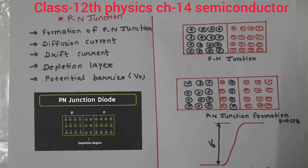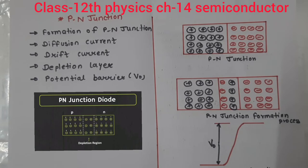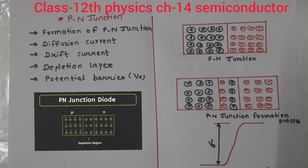In extrinsic semiconductor, we have two types: P-type and N-type. In P-type, we mix trivalent impurities. In N-type, we mix pentavalent impurities. Both P-type and N-type semiconductors will be included in our discussion.